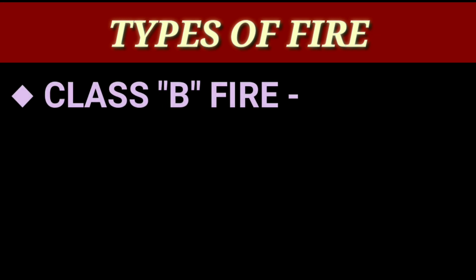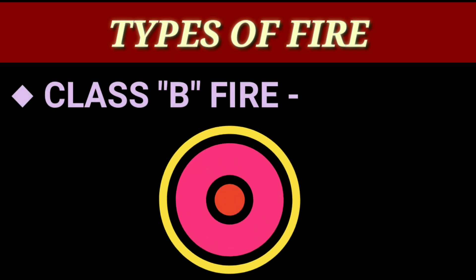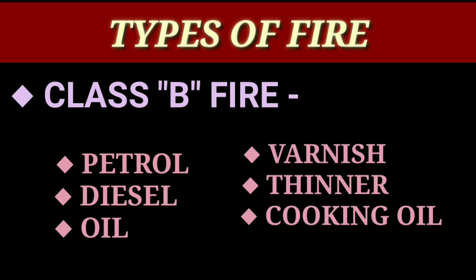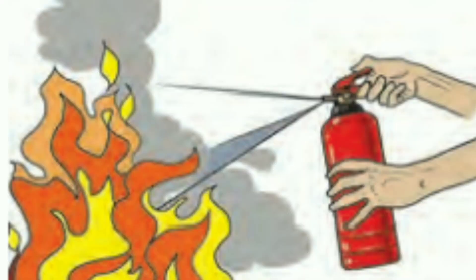Number two: Class B fire. This type of fire catches due to flammable liquid substances. Fire caused due to petrol, diesel, oil, varnish, thinner, cooking oil and paints are included in Class B fire. These substances are lighter than water, so fire extinguishers can be used to extinguish such fire.